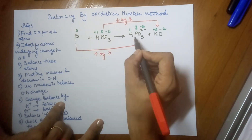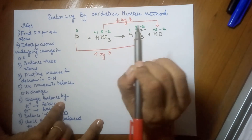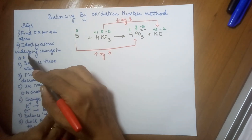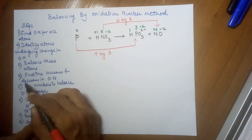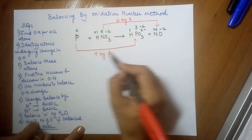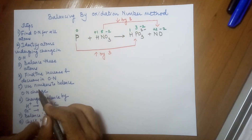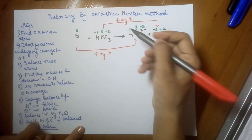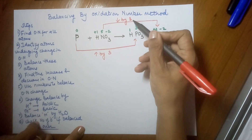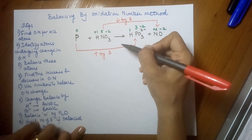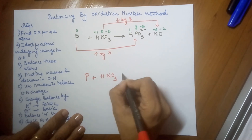Since the increase and decrease in oxidation number are the same, let's check if these atoms are balanced. We have one phosphorus on each side — balanced. One nitrogen on each side — balanced. We've also found the increase and decrease in oxidation number: phosphorus increases by three, nitrogen decreases by three. Since they are already equal, no further equating is needed.